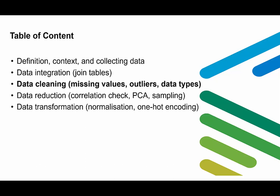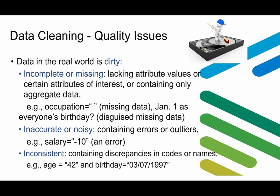Today, let's start with data cleaning. Data quality can be reviewed from multiple dimensions: whether the data is complete, whether it is accurate, whether it is consistent, and more. Data in the real world is often very dirty. For example, it can miss certain attribute values or even certain attributes, or it contains only aggregated data — for instance, occupation could be empty, or less obviously, January 1st could appear as everyone's birthday.